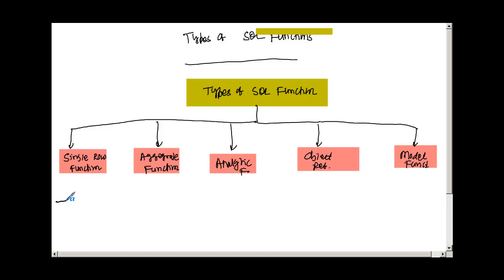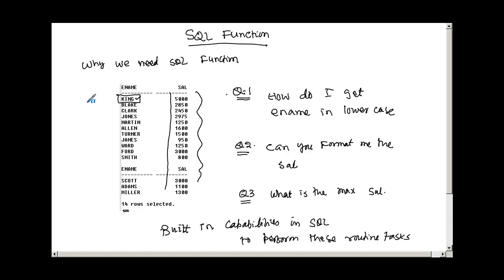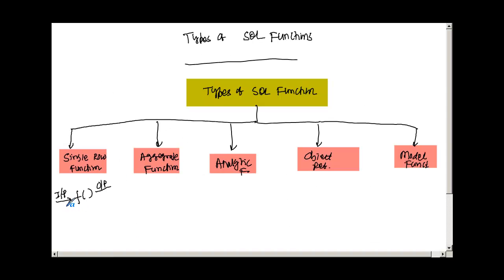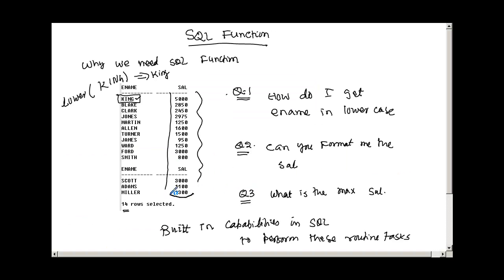In the case of a single row function, you give one row of input and get one output — one input, one output. For example, if I take the name 'KING' and apply the LOWER function, the output will be 'king' in lowercase. Aggregate function takes multiple inputs and returns one output. We will discuss more examples when we cover each function type in detail.